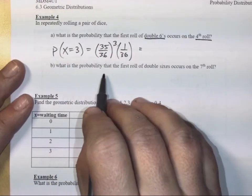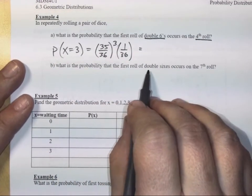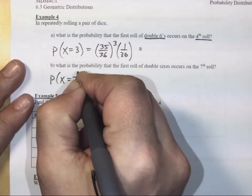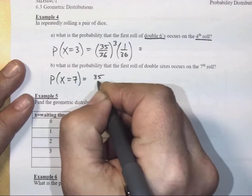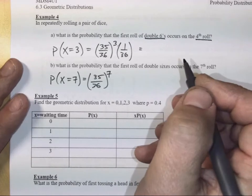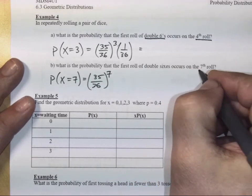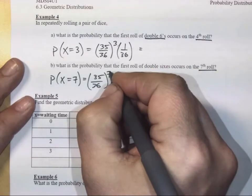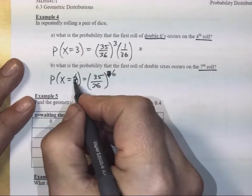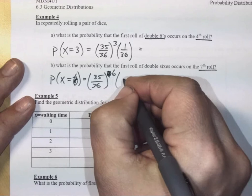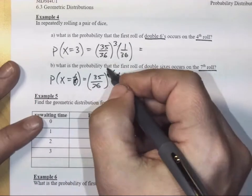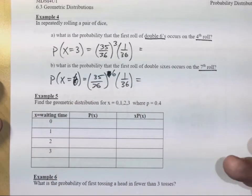What is the probability that the first roll of double sixes occurs on the seventh roll now? The probability of X equals seven is equal to 35 in 36 raised to the seven. Oh, wait a minute. It's not seven. It happened on the seventh roll. Oh, so this must equal six. We must have had to wait six times. Ah, common mistake.